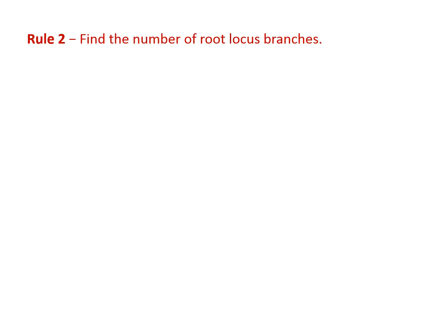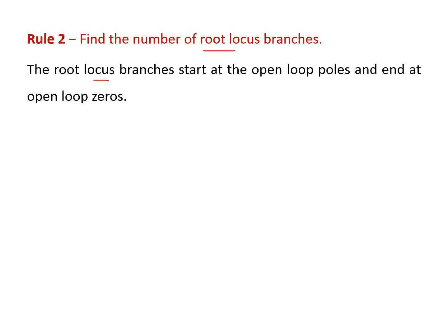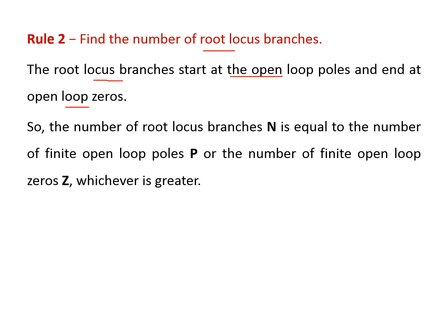The second rule is to find the number of root locus branches. Root locus branches start at the open loop poles and end at the open loop zeros. If N is the number of root locus branches, then N equals P (number of open loop poles) if P is greater than Z (number of zeros).